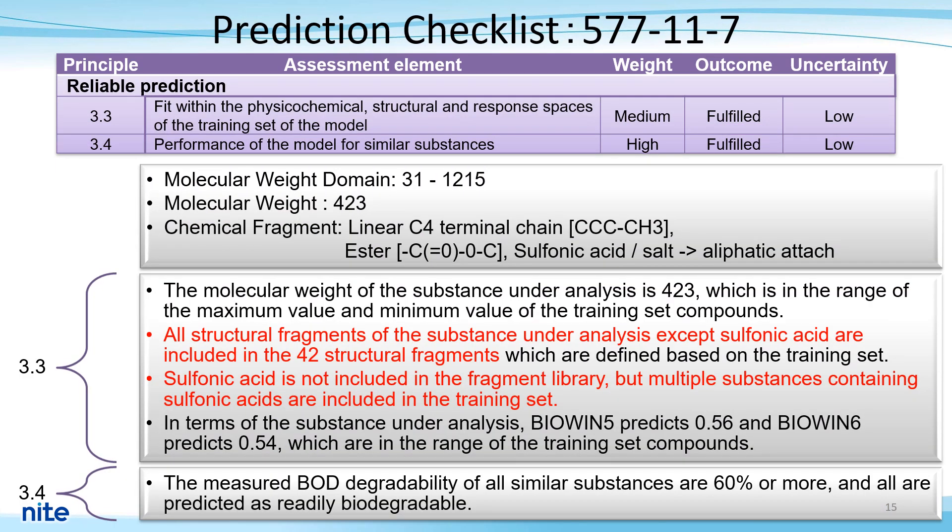Items 3.1 through 3.6 are used to evaluate the reliability of the prediction from several perspectives. For 3.3, it is evaluated whether the substance under evaluation is within a reasonable range compared to the range defined in the training set. The molecular weight of the analyte is within the maximum and minimum values of the training set compounds. All structural fragments of the analyte except sulfonic acid are included in the 42 structural fragments defined based on the training set. Sulfonic acid is not included in the fragment library, but several substances containing sulfonic acid are included in the training set.